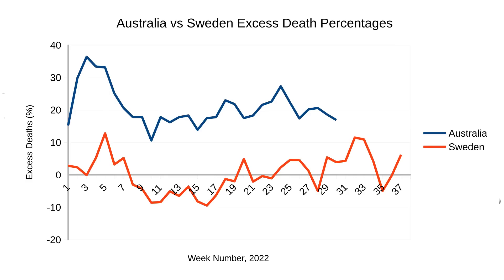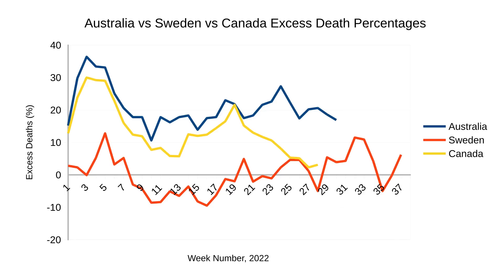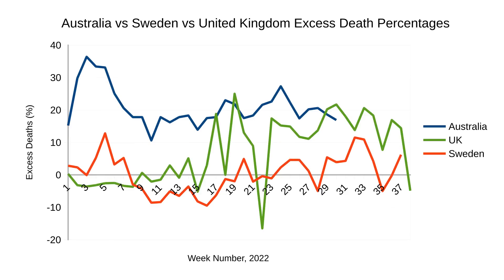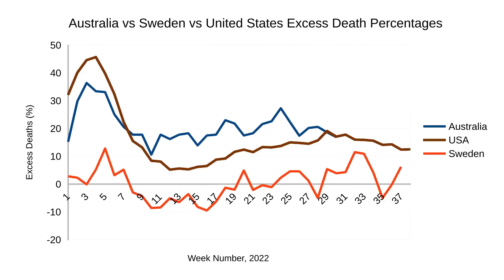If we compare the percentage change of excess deaths between Sweden and Australia, which basically takes out the population difference, we can still see that Australia is well above Sweden. They kind of follow the same pattern, but a lot less extra people are dying in Sweden. Adding Canada in yellow, it pretty much follows the same percentage of extra deaths as Australia, except that by about week 20 it drops off quite rapidly, while Australia continues to have significant excess deaths. Adding the UK in green, it was faring fairly well at the start of the year but then numbers went a bit crazy in the middle, coming back to some normalcy in the latest reporting period. And finally, the United States in brown seems to be following a similar trend to Australia, and percentage-wise, it certainly has more excess deaths than Sweden.